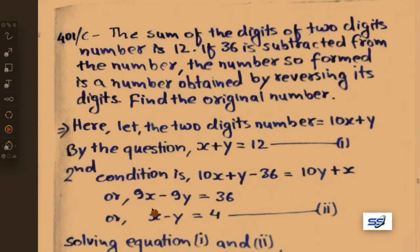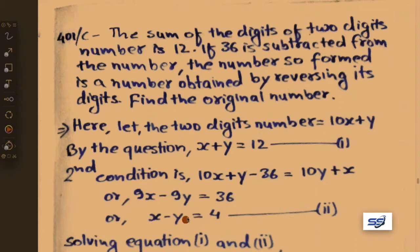Simplifying: 10x minus x gives 9x, and y minus 10y gives minus 9y, so 9x minus 9y equals 36. Dividing through by 9 gives x minus y equals 4. Let this be equation 2.